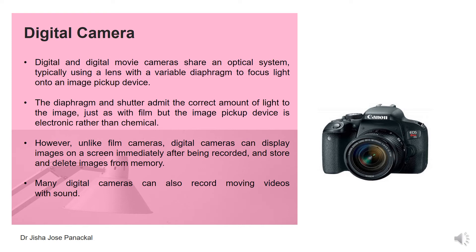Unlike film cameras, digital cameras can display images on a screen immediately after being recorded, and store and delete images from memory. This is the major difference between old film cameras and digital cameras. Many digital cameras can also record moving videos with sound.